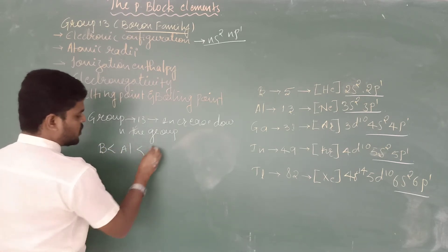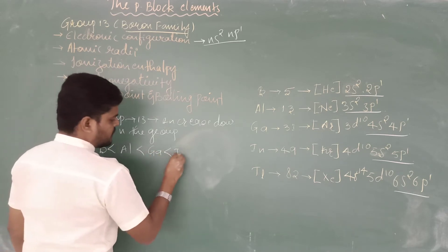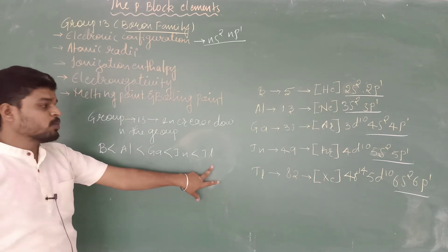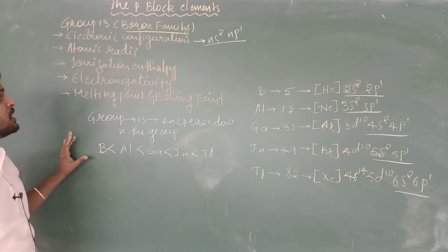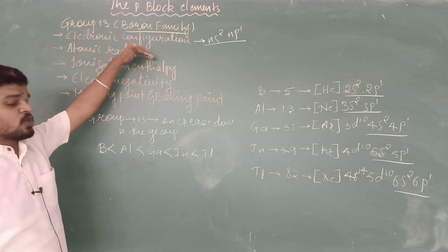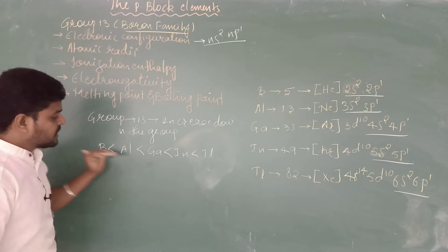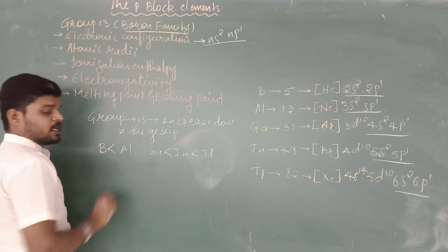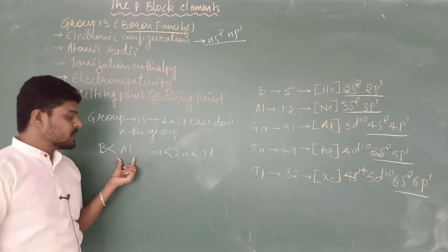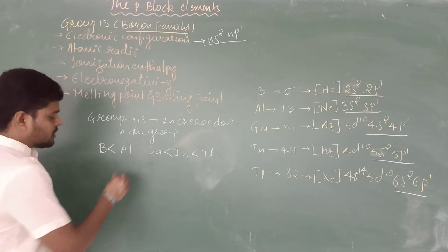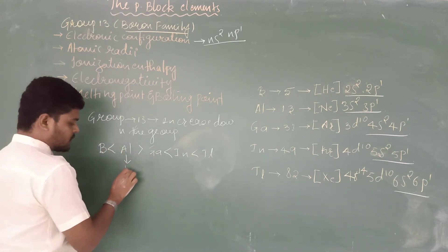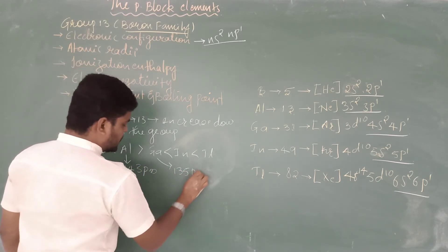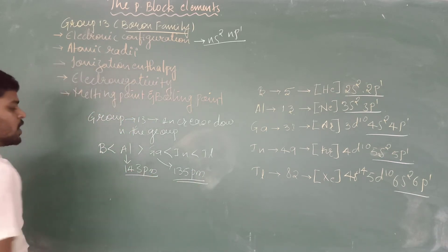So boron is smaller than aluminium, aluminium is smaller than gallium, gallium is smaller than indium, and indium is smaller than thallium going down the group. However, there is one exception: when comparing aluminium and gallium, aluminium has a larger atomic radius of around 143 picometres, while gallium has a smaller radius of around 135 picometres.